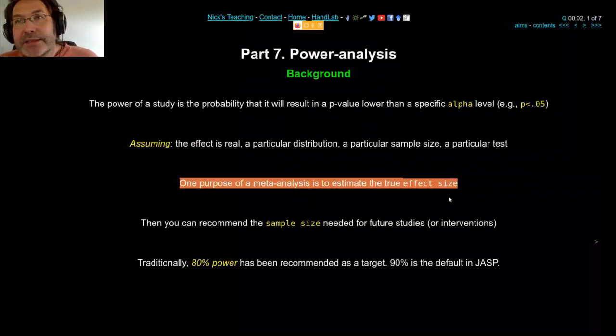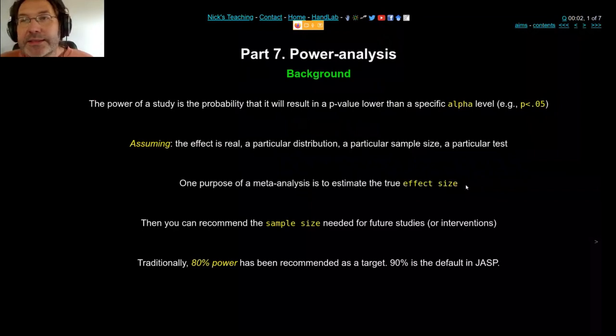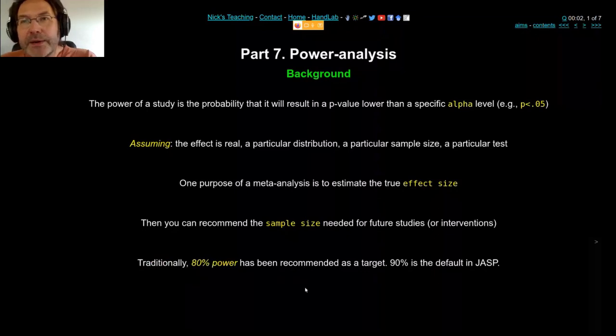So if you do a meta-analysis to estimate the true effect size, you can then go one step further and recommend the next sample size for future studies. For a long time, we've used 80% as the recommended power. So that means if you're planning a study, how many data points should I collect to be 80% sure that the intervention is going to give me a significant p-value?